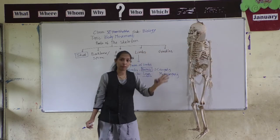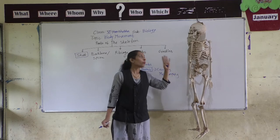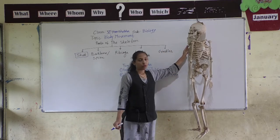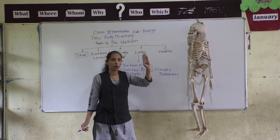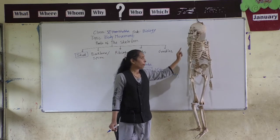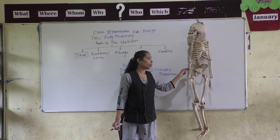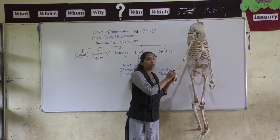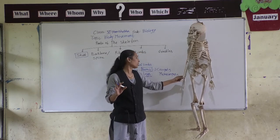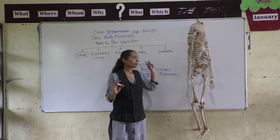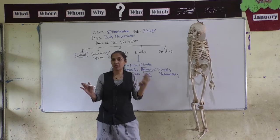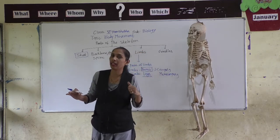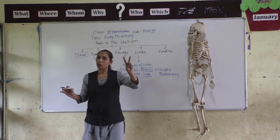Both forelimbs have the same structure and the same number of bones. The forelimbs are connected to the backbone via the shoulder girdle and collarbone. The upper arm is Humerus, the lower arm has two bones — Tibia and Ulna. The wrist has eight carpals, the palm has five metacarpals, each finger has three bones, and the thumb has two bones.